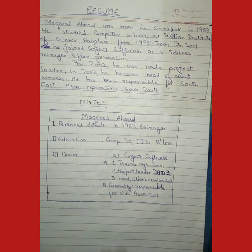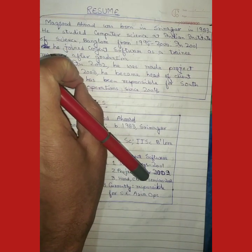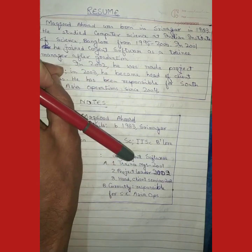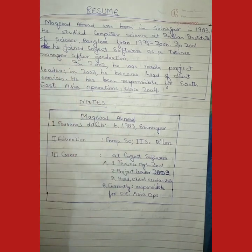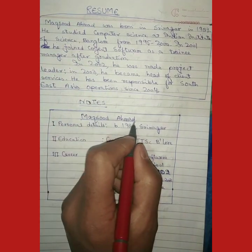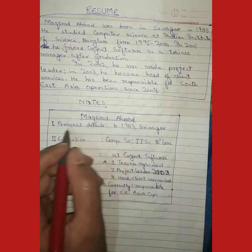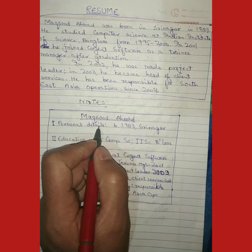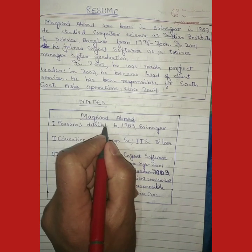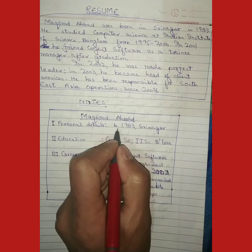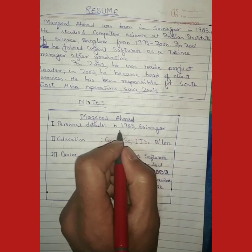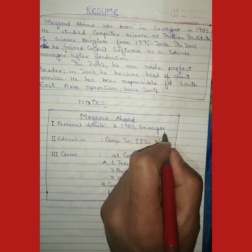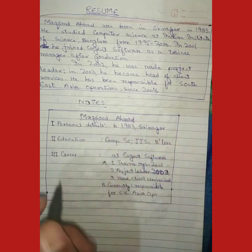Maksud Ahmad is the title because the whole resume deals with him — he is the main and only person talked about in these notes. So the title will be 'Maksud Ahmad'. Then Roman numeral one: personal details, colon — born: 1983, Srinagar. That means he was born in 1983 and born in Srinagar. See how short it is.